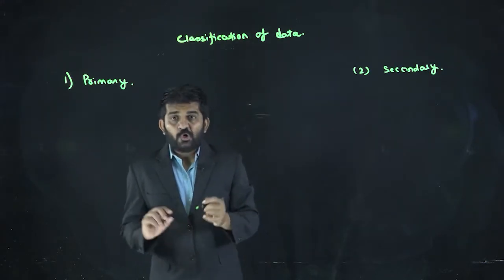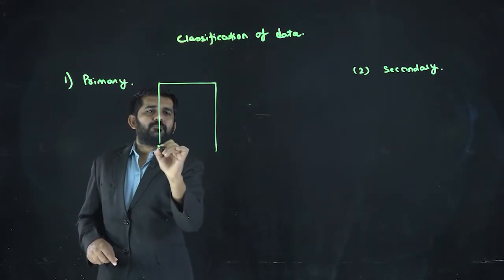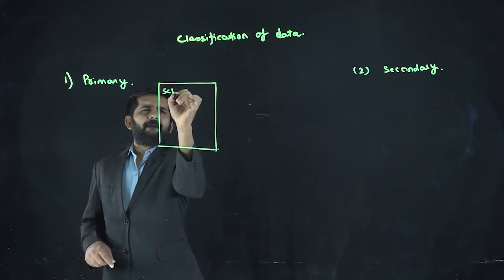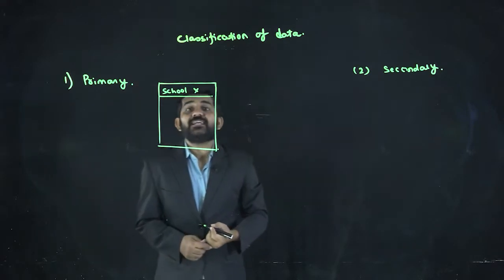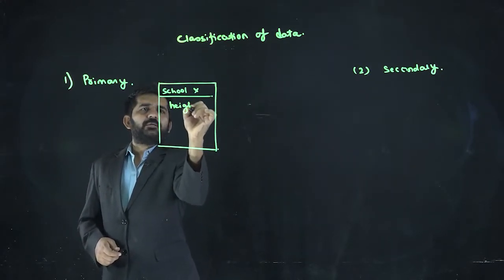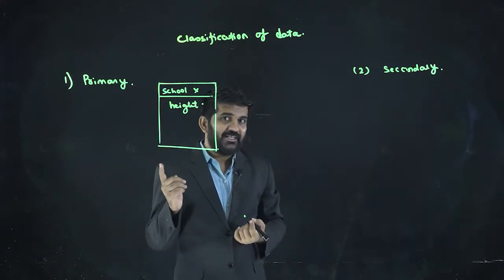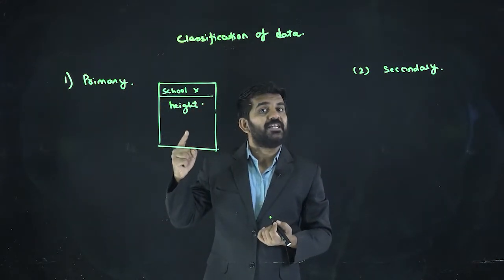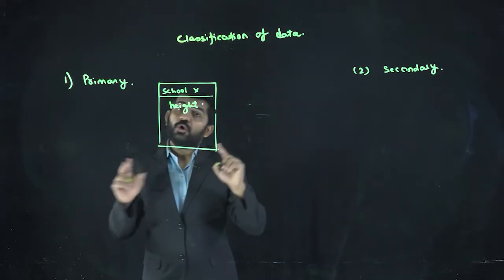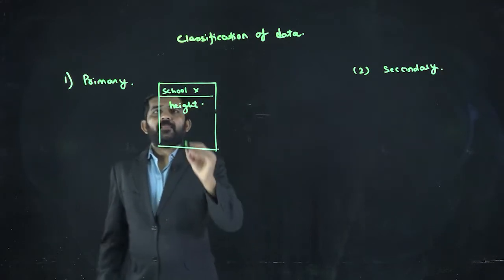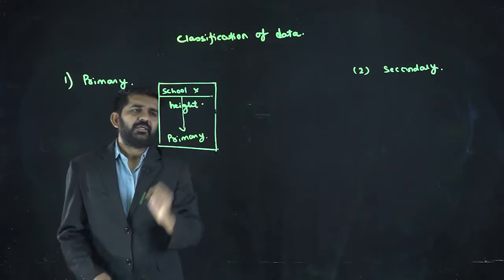Try to understand your school, say School X, takes the data of height of the students. Let us again understand - continuous or discrete? Continuous. It cannot be measured exactly. Measures height of all the students. For your school, this data is a primary data.